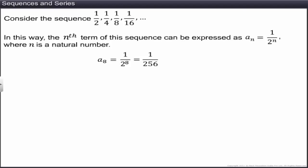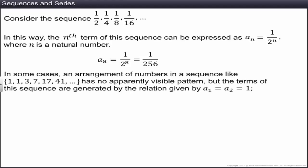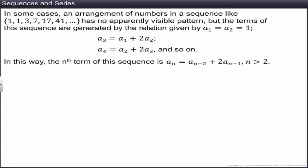In some cases, an arrangement of numbers like 1, 1, 3, 7, 17, 41, and so on has no apparently visible pattern. But the terms are generated by the relation a₁ = a₂ = 1, and each subsequent term is obtained by adding the previous term and 2 times the term before it. That is, the nth term equals the (n−2)th term plus 2 times the (n−1)th term, for n greater than 2.